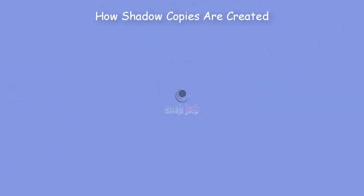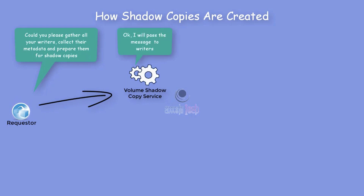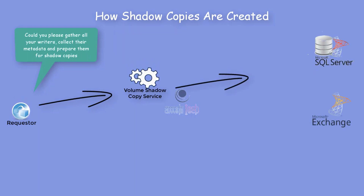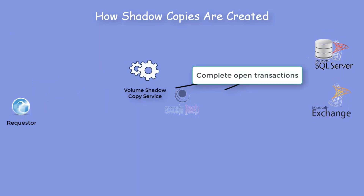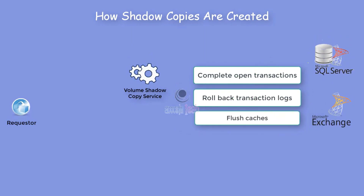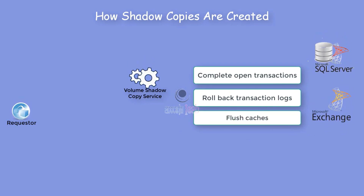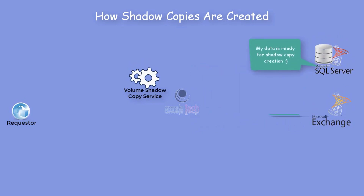Finally, let's see how shadow copies are created. The Requester — your backup application — requests VSS to gather all the Writers, collect their metadata, and prepare them for shadow copy creation. VSS gives the green signal and passes this message to the Writers. VSS then tells the Writers to complete all open transactions, roll back transaction logs, and flush any cache. Once that is done, the Writers are in a good state and notify VSS that the data is ready for shadow copy creation.